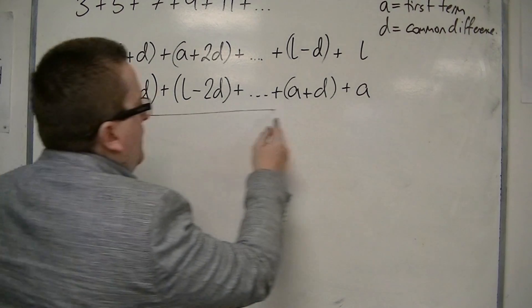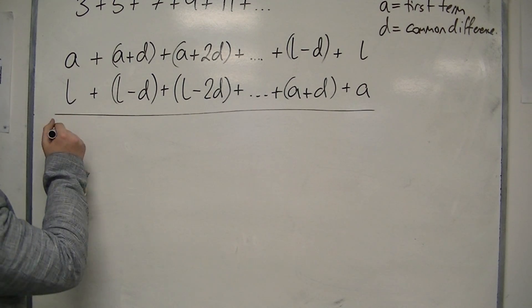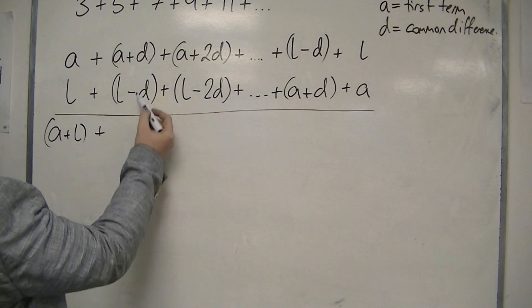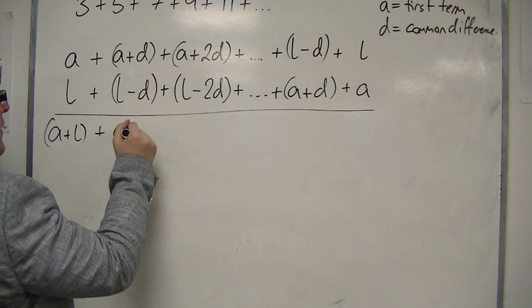Now, if you added those two together and combined them, well, I'd have A plus L there, and then I'd have A plus D plus L minus D. The D's are cancelled, so I've just got A plus L.